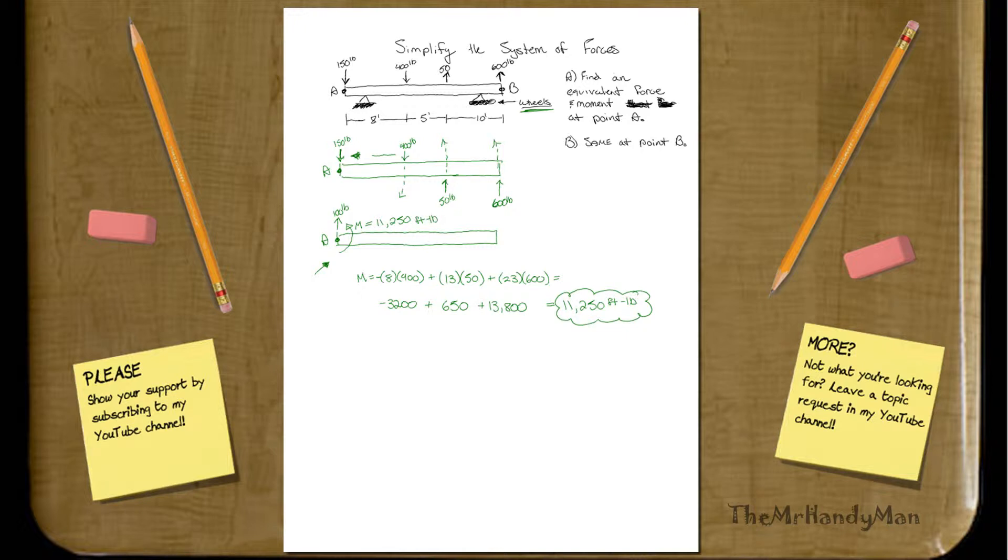So I'm not going to draw the main picture because it's very misleading. What I'm trying to get across is that you can bring everything down to one force and one moment, which is 100 pounds, plus the moment, which is 11,250 foot-pounds.